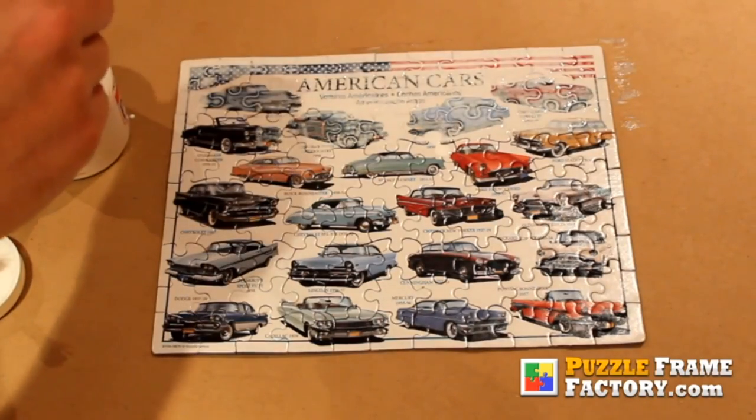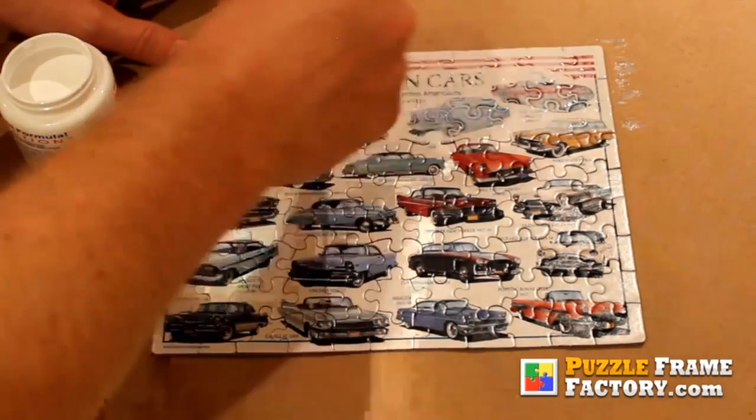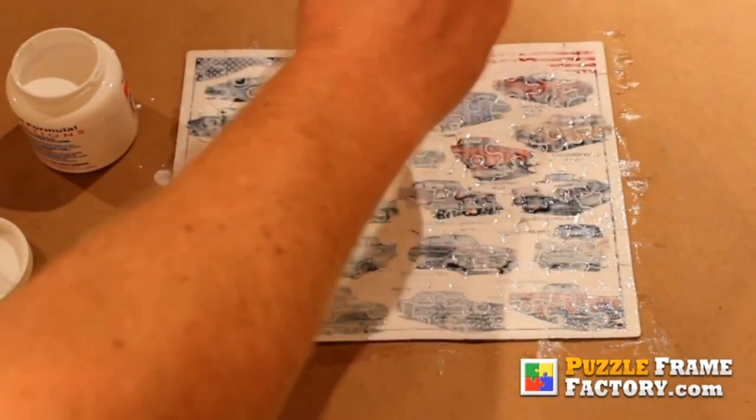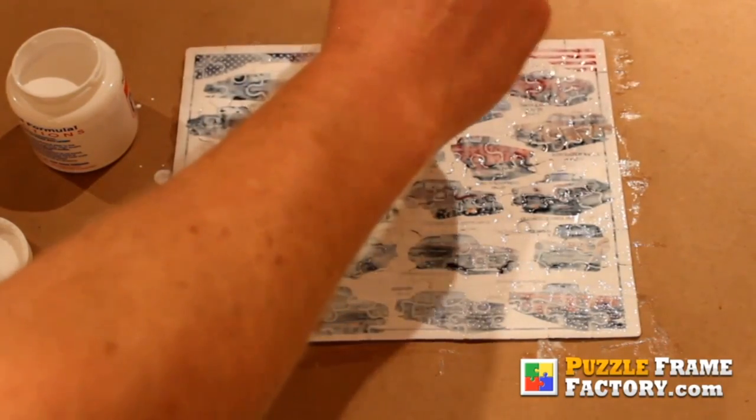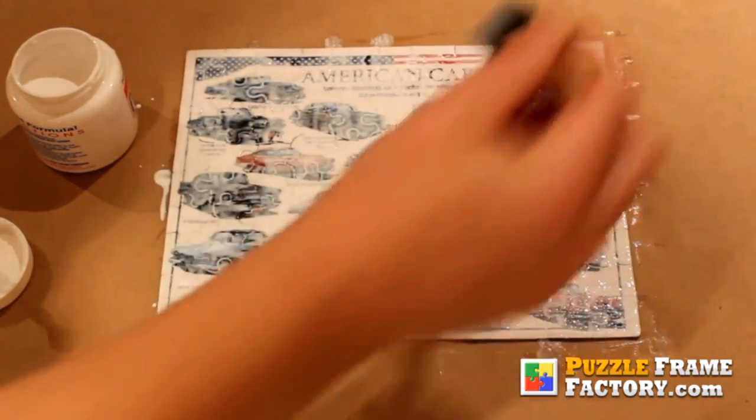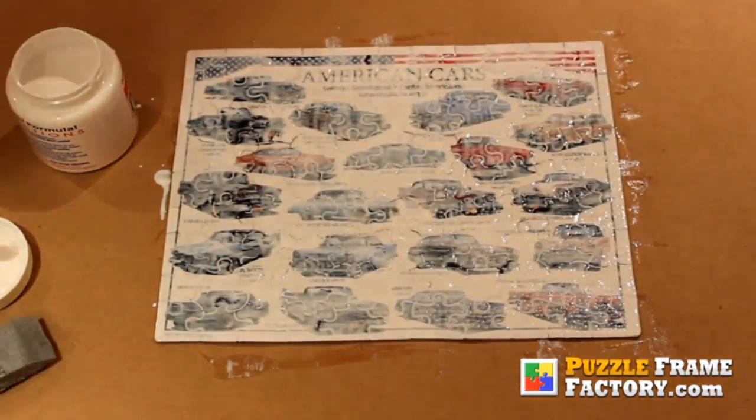First, I'm applying my puzzle glue with an even coat to adhere all the puzzle pieces together for framing. Then, I'll let this dry for about 12 hours.